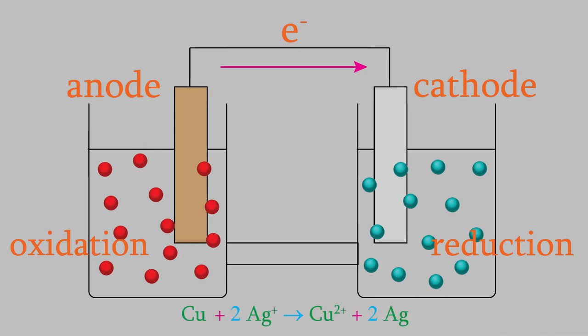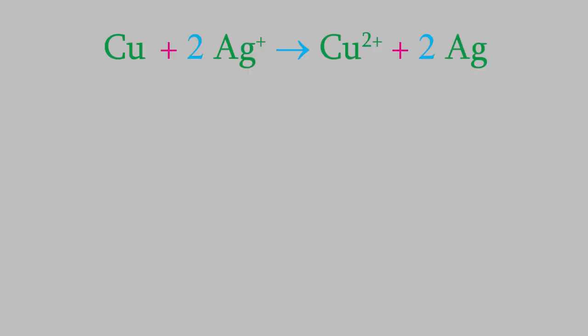We can then use the electricity flowing between the half-reactions to power electronic devices. For example, here's the redox reaction in the voltaic cell that we looked at in the last video. In the oxidation reaction, copper loses electrons to form copper ions, and in the reduction reaction, the electrons react with silver ions to form silver metal.